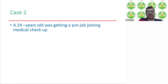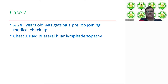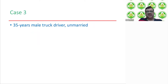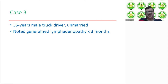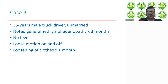Case two: a 24-year-old young male was getting a pre-job joining medical checkup. As part of routine checkup, he underwent a chest X-ray which showed bilateral hilar lymphadenopathy. However, he is totally asymptomatic. Case three: a 35-year-old male truck driver who is unmarried. He noted generalized lymphadenopathy for the last three months. There is no history of fever, but he has loose motions on and off and weight loss — noted by loosening of clothes for one month.